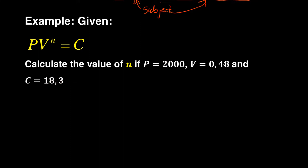Now most students at this stage, this is what they usually do. They are like, okay, I'm given that P is 2000, so they will say 2000, and then V is 0.48 to the power of n equals 0.48, and then they will have n equals... my C is 18.3, so now they say I must find my n from that.